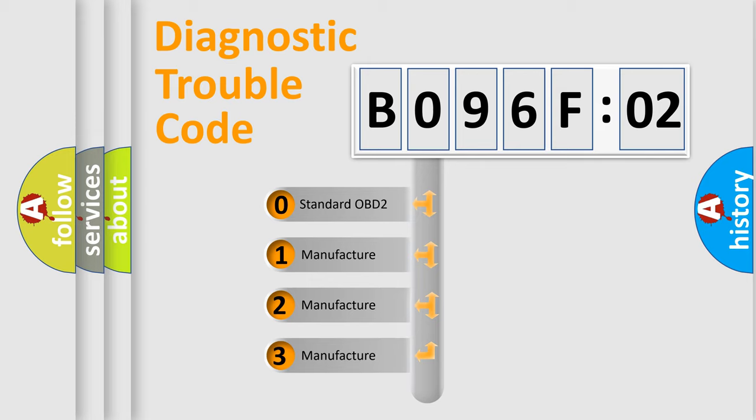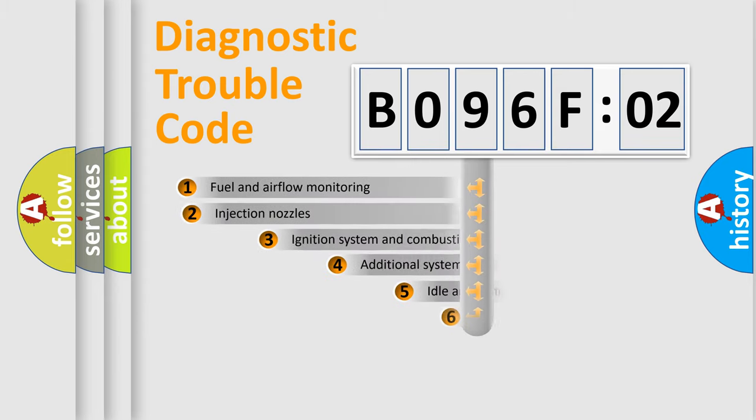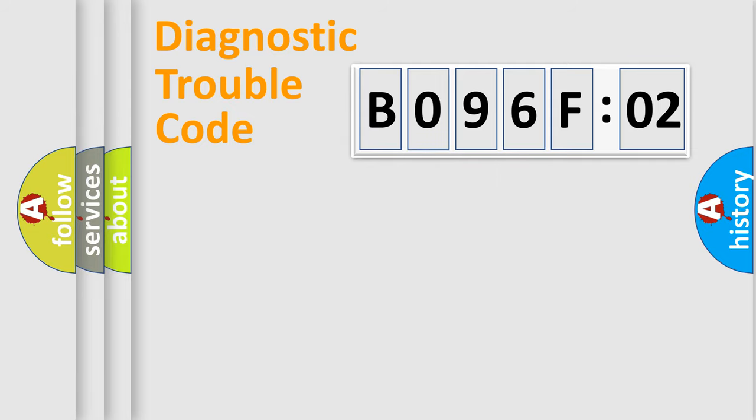If the second character is expressed as zero, it is a standardized error. In the case of numbers 1, 2, or 3, it is a more precise expression of the car-specific error. The third character specifies a subset of errors. The distribution shown is valid only for the standardized DTC code.